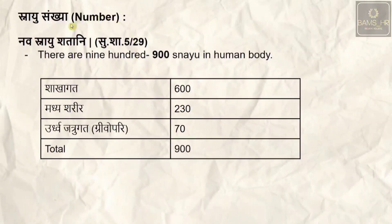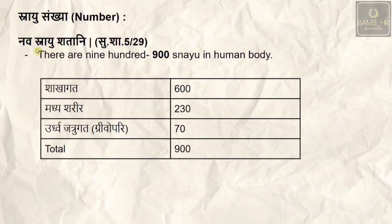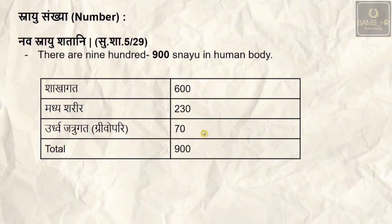Regarding snayu sankhya — the number of snayu present in the human body — navah snayu shatani: there are 900 snayu in the body. Among them, shakha gata (extremities) has 600, madhya (thorax and abdomen) has 230, and urdhva jatru gata — the above-clavicular regions — has 70, totalling 900.